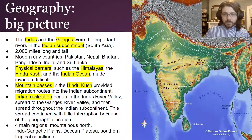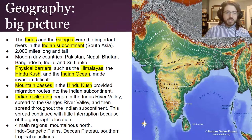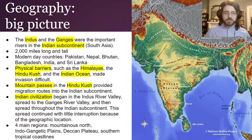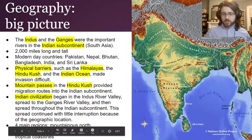There are some passes where you can cross into this region, and those become important parts of stories. This Indian civilization began in the Indus River Valley, then spread into the Ganges River Valley, and then spread throughout the entire subcontinent — largely without interruption because it's so hard to get in. There are four main regions: the mountainous north, the Indo-Gangetic Plain where most people lived, the Deccan Plateau with its higher elevation and different climate, and the tropical coastlines with their own climate and cultures.